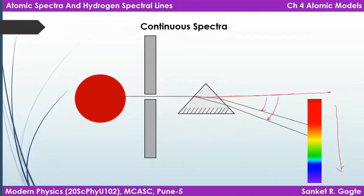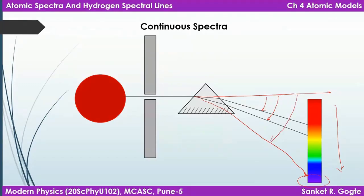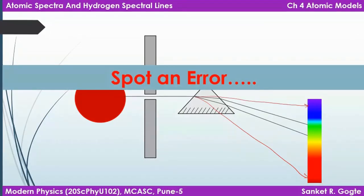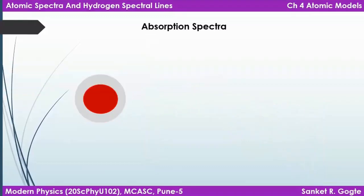Violet color, having the lowest wavelength in visible light, will be deviated by the largest angle and should appear at the far end of the spectrum. What is shown in the image is reversed — red is shown deviated by a larger angle than blue and violet, which is incorrect. That error has been correctly spotted. Now let's move on to consider absorption spectra.